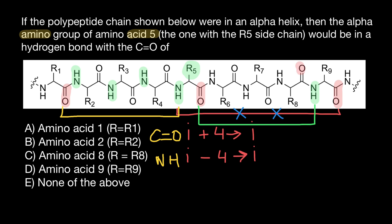What about this carboxyl group here? Using i plus four — if this is the end of the alpha helix, this carboxylic group, just like the others at the end, doesn't have any amino group downstream to make a hydrogen bond. This means that the first four amino groups of the first four amino acids are going to make lone pairs, and the last four carboxylic groups are also going to be lone pairs without hydrogen bonding.